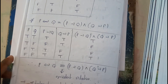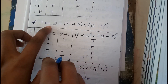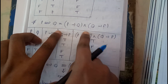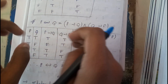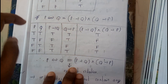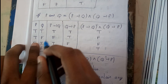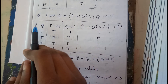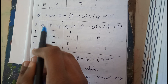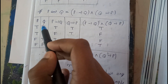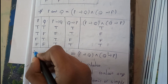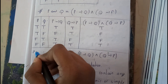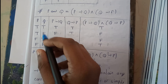Let us go through the proof: p double implies q is equal to p implies q AND q implies p. This is how we solve this kind of problem using a truth table. There are two variables — p and q — so we have two-power-n combinations, where n is the number of variables. Two power two equals four combinations: TT, TF, FT, FF.